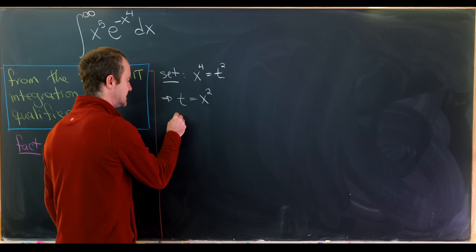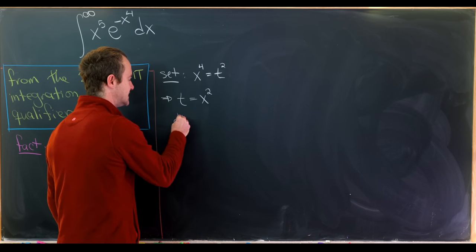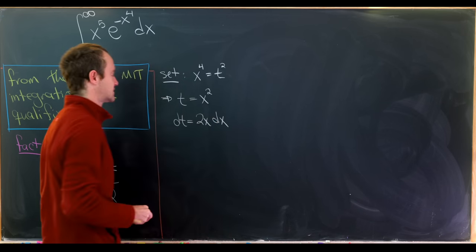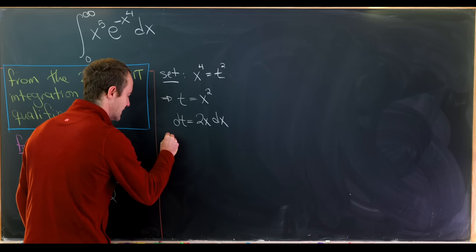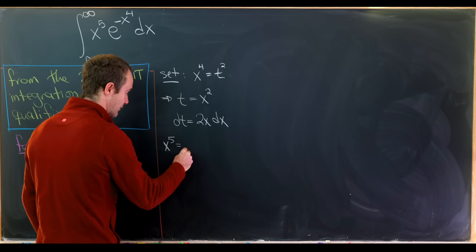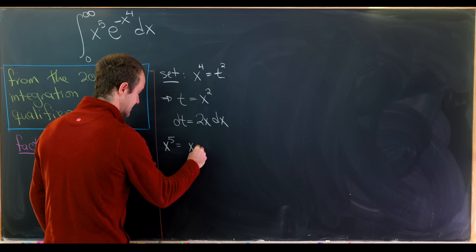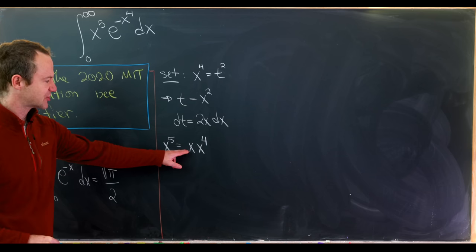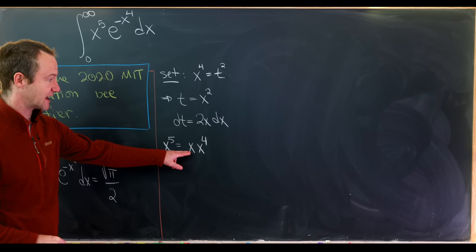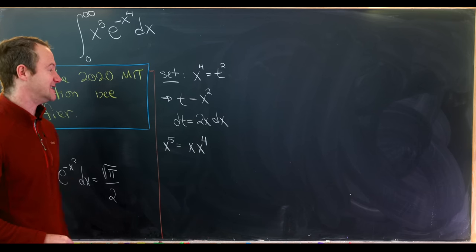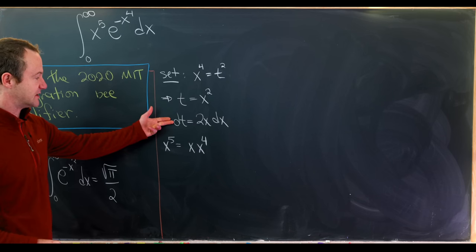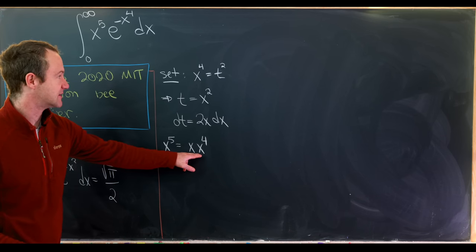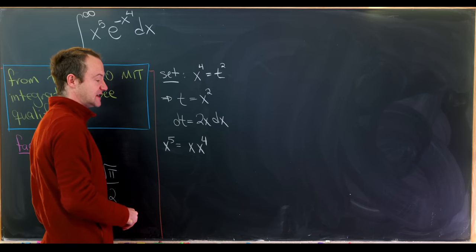Now let's calculate our dt component. Our dt component is equal to 2x dx. But now we can take this x to the 5th and rewrite it as x times x to the 4th. And that's actually really good news because we can take one of these x's and fuse it with the dx and replace it with dt. And we'll take the other x, this x to the 4th, and rewrite it as t squared.